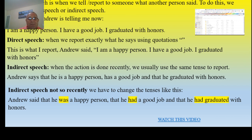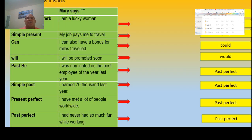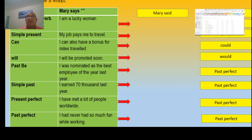Now let's see more examples. This time I'm going to use Mari. We are going to use indirect speech not so recently — as if it was three days after her original speech. This is how it works: Mari says, 'I'm a lucky woman' — simple present. So when I report this three days later, I would say: 'Mari said that she was a lucky woman.' The word 'that' is optional — I can say 'Mari said that she was a lucky woman,' or 'Mari said she was a lucky woman.'